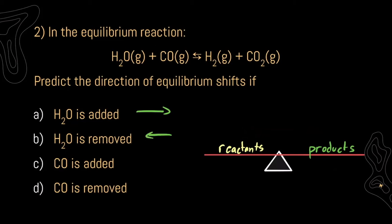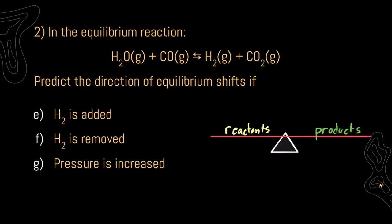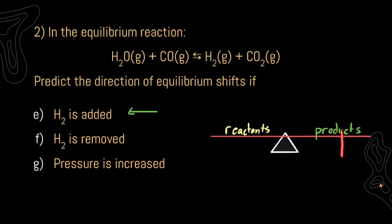If we add carbon monoxide, we're going to be increasing the number of reactants, sending our reaction towards our products and our equilibrium to the right. If we remove carbon monoxide, we are lowering our reactants, and our seesaw is going to shift towards our reactants, sending our equilibrium to the left. If we add hydrogen gas, we're going to be adding to our products, raising that side of our seesaw, sending it towards our reactants, shifting our equilibrium to the left. If we remove hydrogen gas, we're going to be removing our products, and our seesaw is going to shift towards our products, sending our equilibrium to the right.